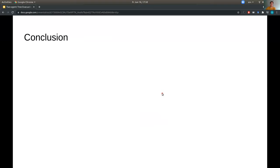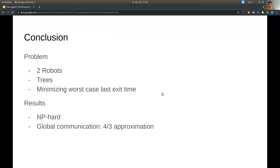Okay, so to wrap up, we considered the problem of evacuating two robots from a tree. And we wanted to minimize the worst case last exit time. And the results we had were that we showed this is NP-hard. We then gave a 4 over 3 approximation ratio for the global communication setting, and a 3 over 2 approximation ratio for the local communication setting. But we also left a multitude of open questions for further research.